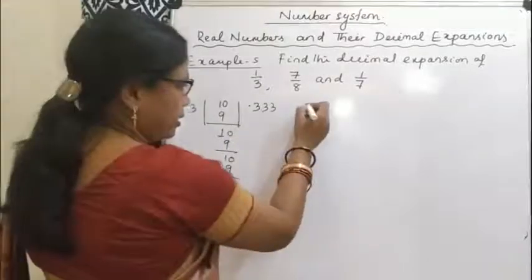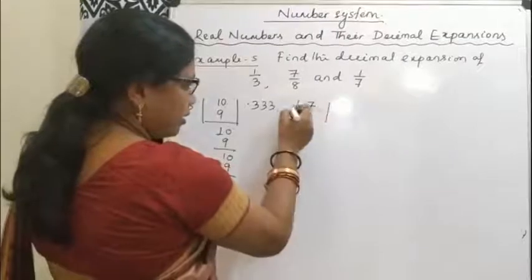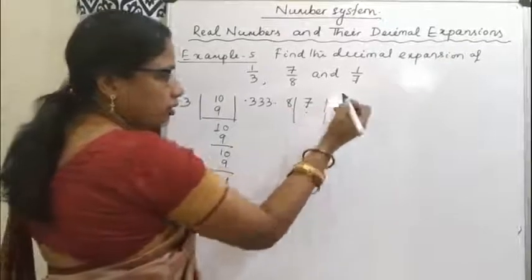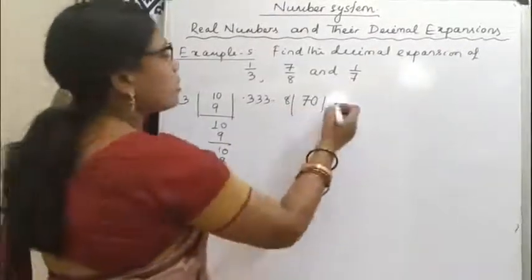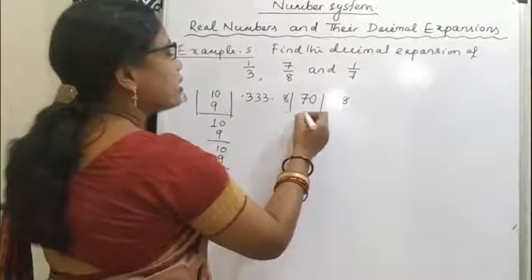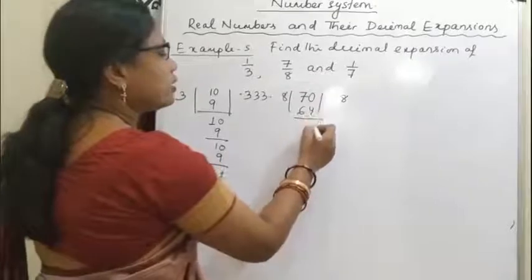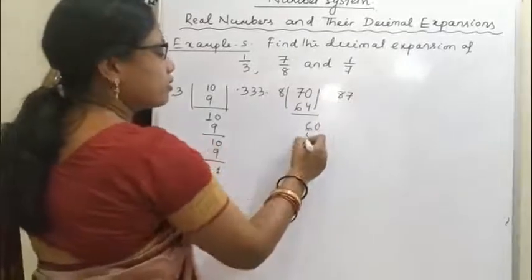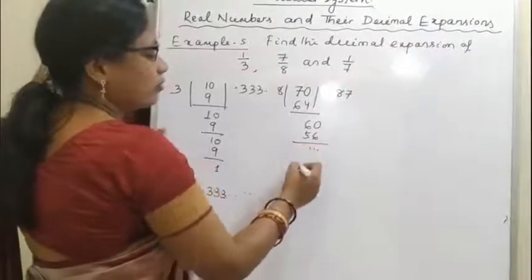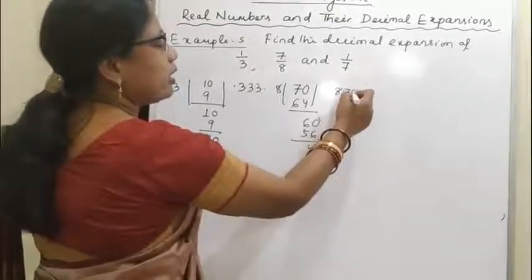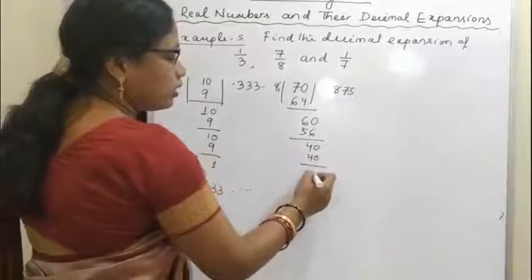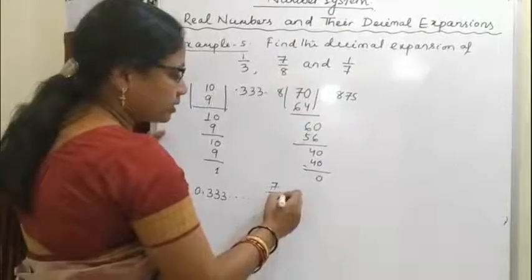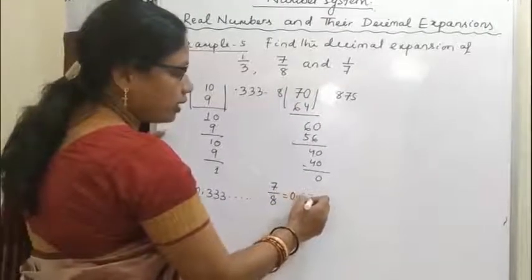Now coming to 7 by 8. So 7 divided by 8 — 7 is not divided by 8, so we put a decimal point and place 0. 8 eights are 64, remainder 6. Then place 0 — 8 sevens are 56, remainder 4. Then again 0 — 8 fives are 40, so the remainder becomes 0. So the decimal representation of 7/8 is equal to 0.875.